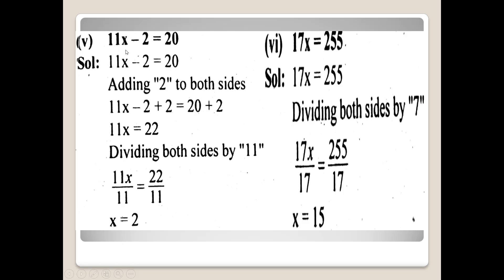Question number 5: 11x minus 2 is equal to 20. Adding 2 to both sides — left hand side پر بھی 2 add کریں اور right hand side پر بھی۔ 11x minus 2 plus 2 is equal to 20 plus 2. Minus 2 اور plus 2 cancel ہو جائیں گے، تو 11x is equal to 22. Dividing both sides by 11 — 11 اور 11 cancel out، تو x is equal to 22 divided by 11, which is 2. تو x کی value 2 آ گئی۔